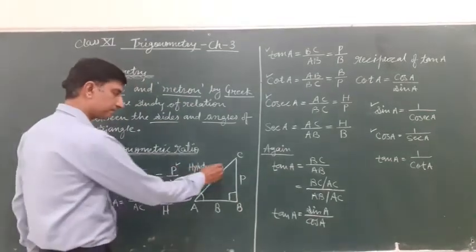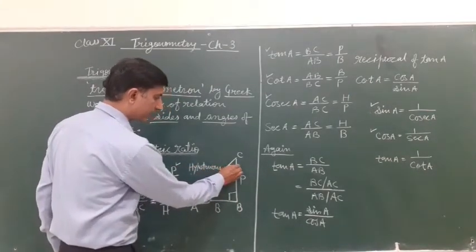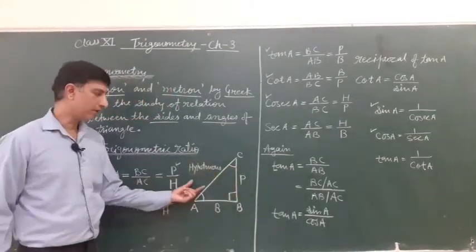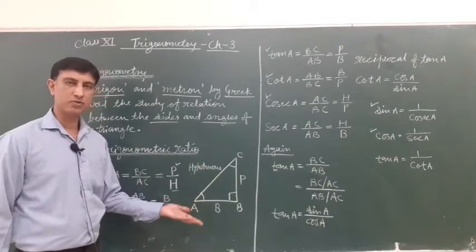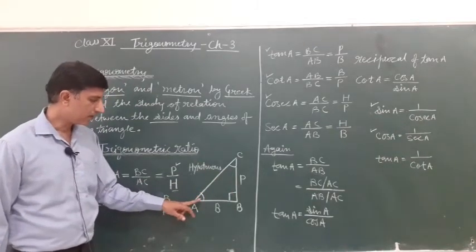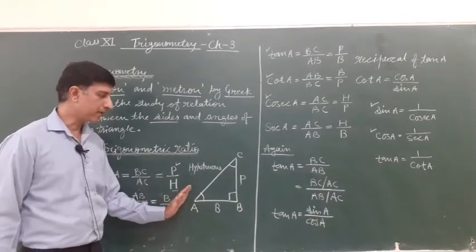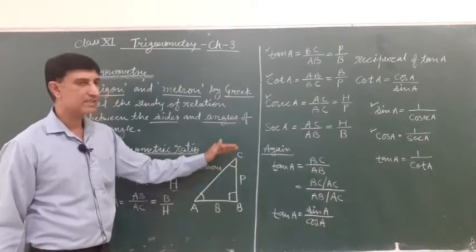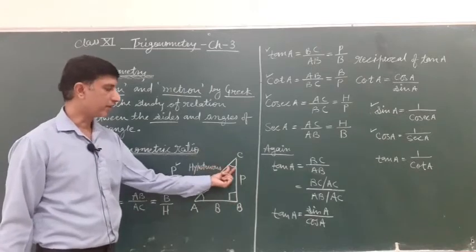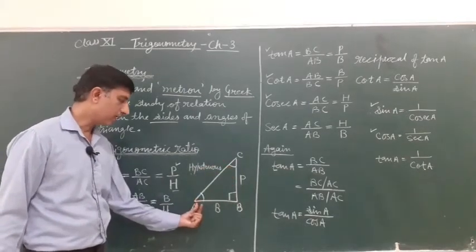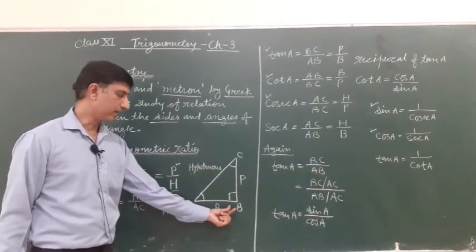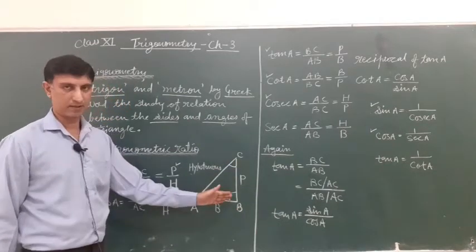If we use angle C, then the trigonometric ratio condition will change. Because here with respect to angle A, perpendicular is BC. And with respect to angle C, perpendicular is AB and the base also becomes BC.